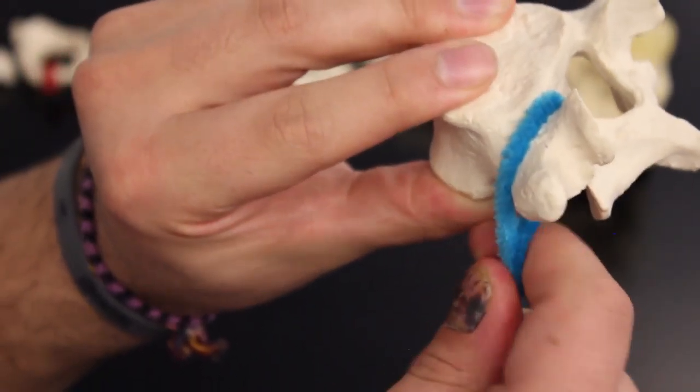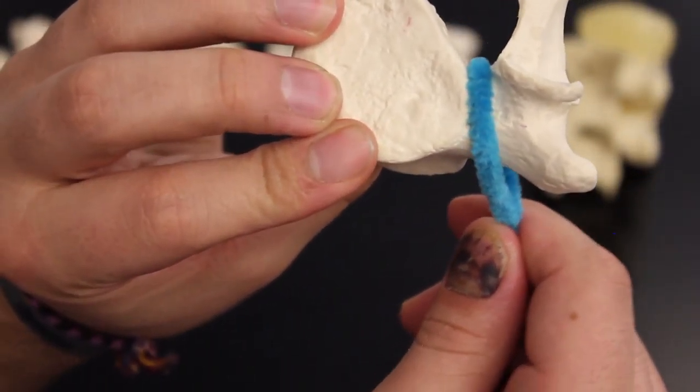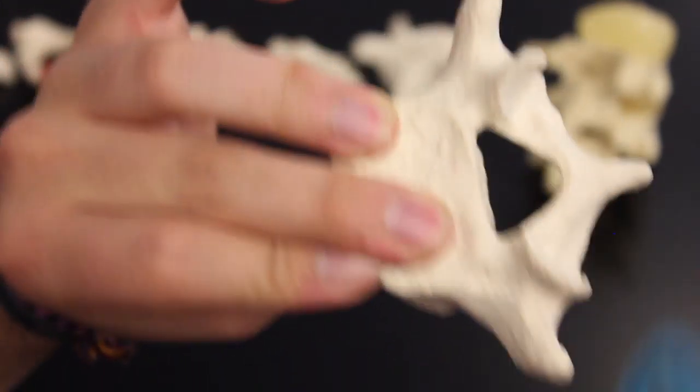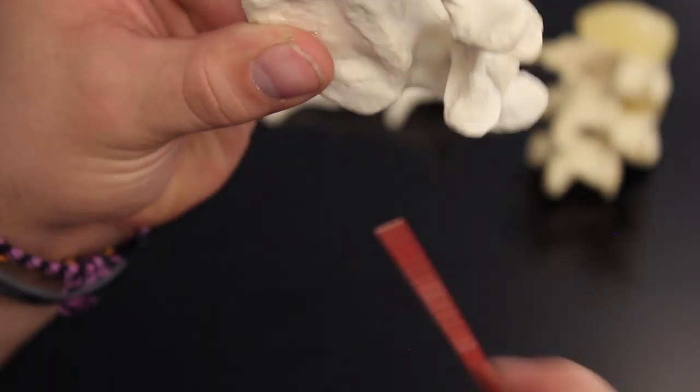Now if I flip it around here and I go in between the body and the transverse process, this chunk right there is actually called the pedicle. I just want to show you that it's better seen on that one.